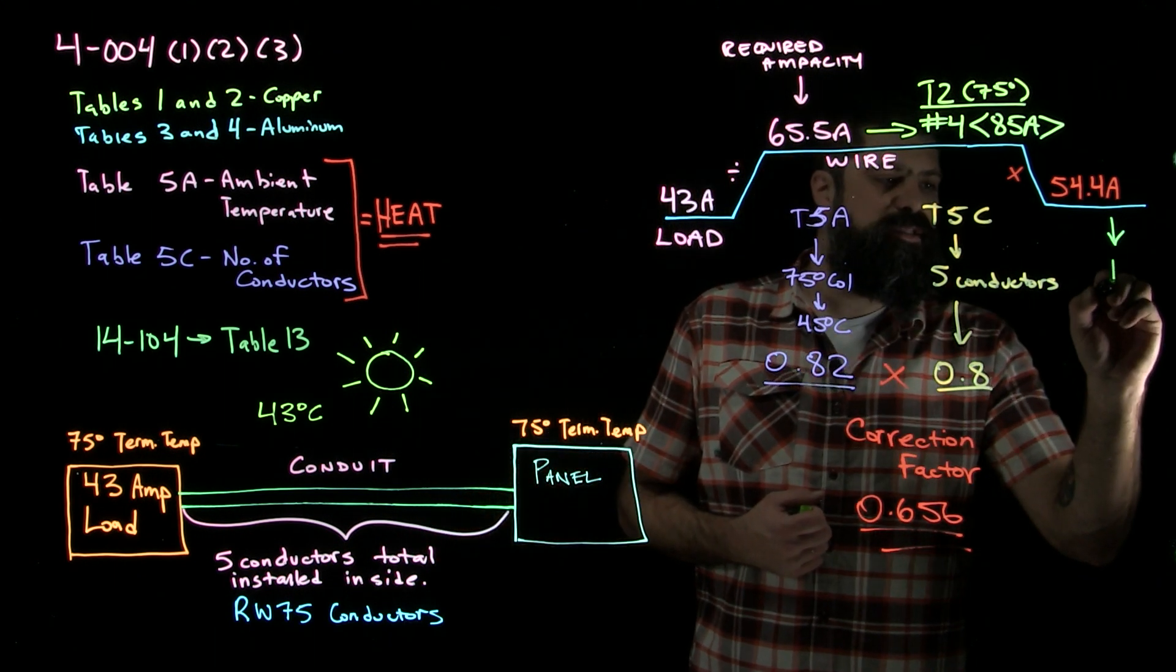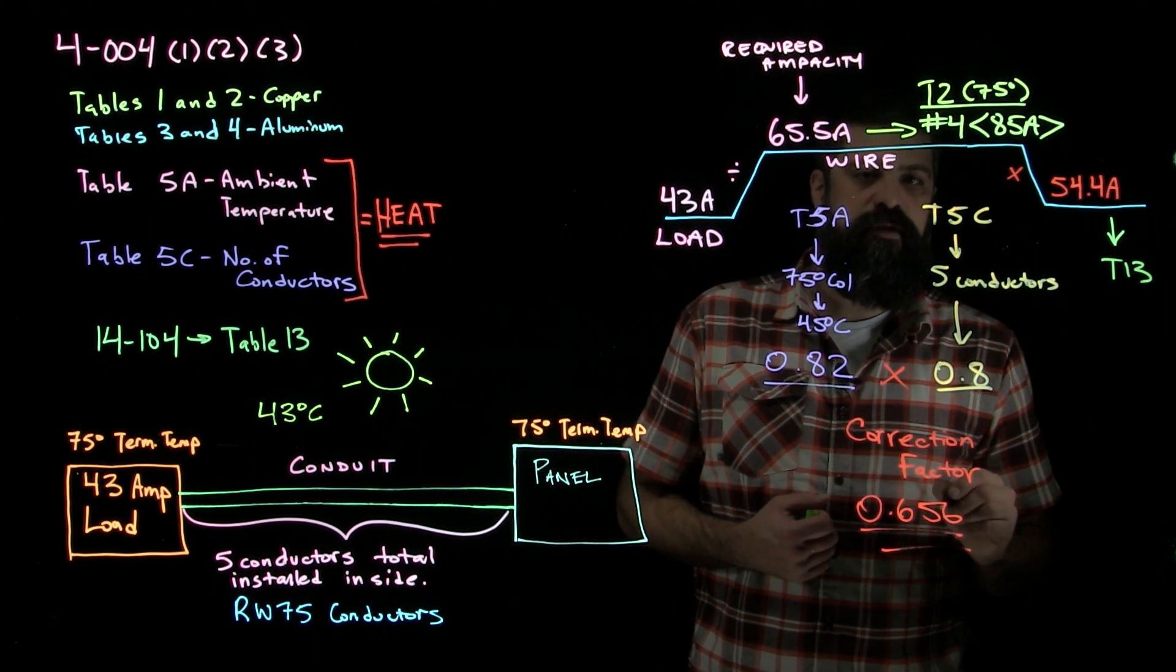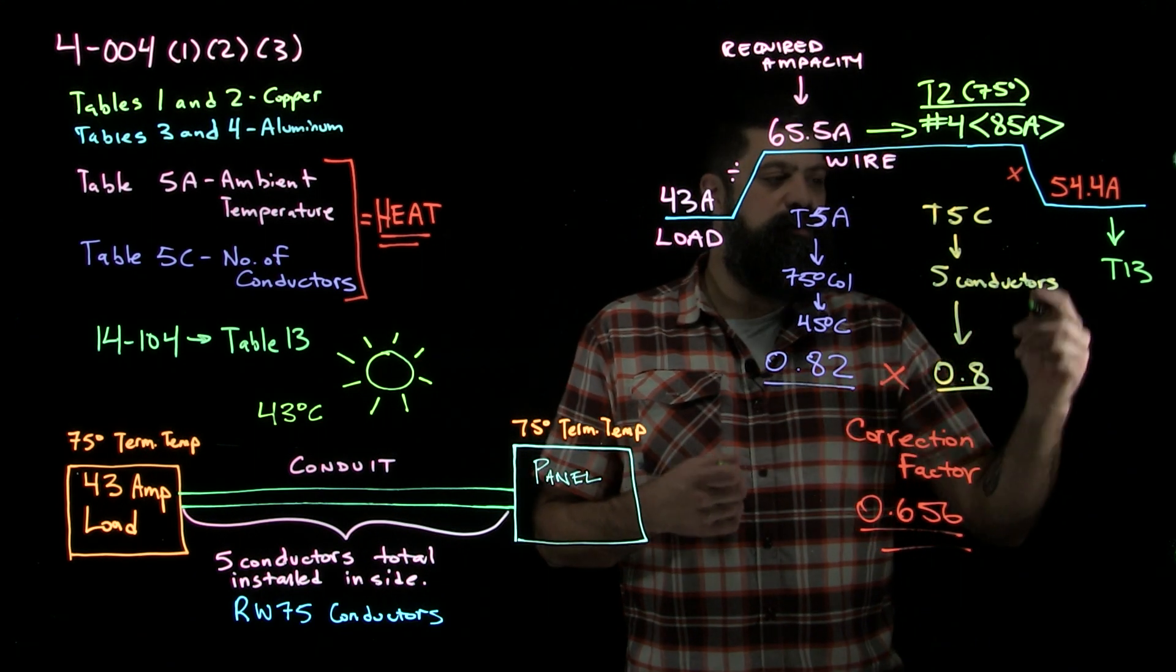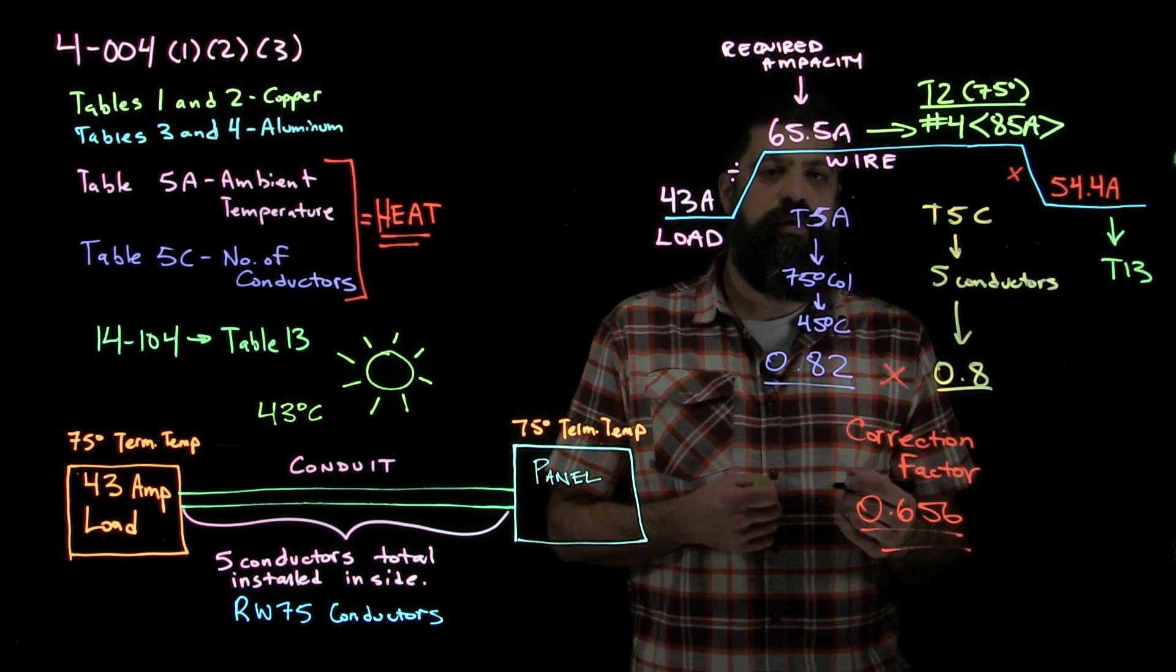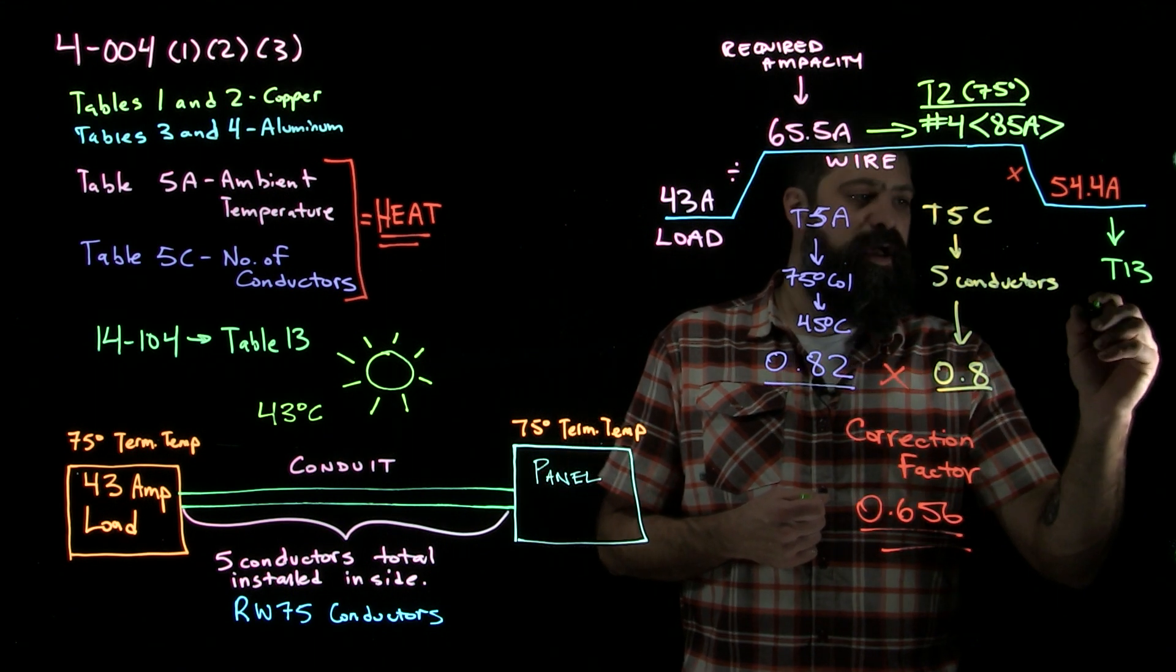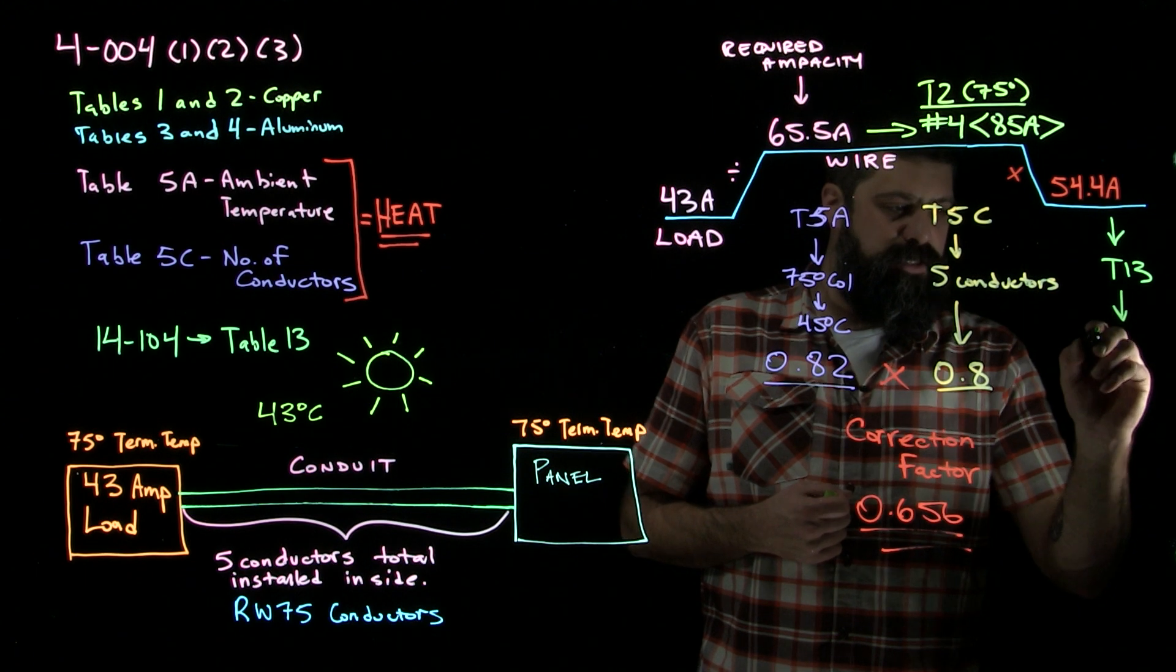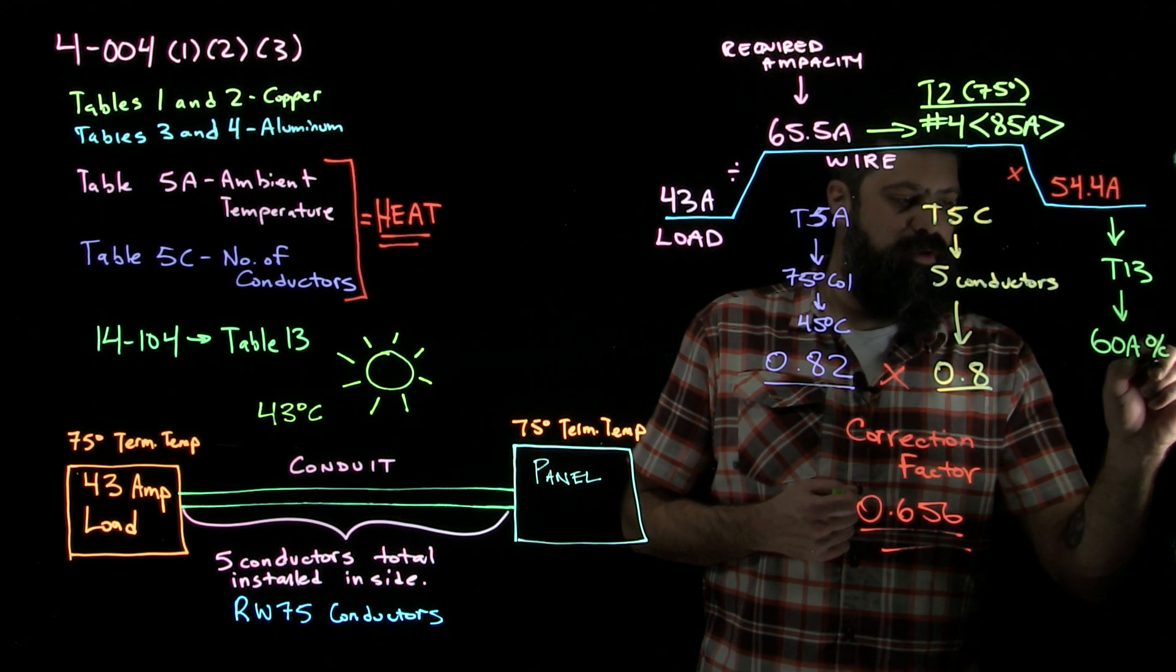So 54.4 amps, when I take that to table 13 and I look into that range, it tells me that if it falls within that range, I go to the size that it corresponds to at the higher end. So table 13 for a wire that's 54.4 amps tells me that I would use a 60 amp overcurrent.